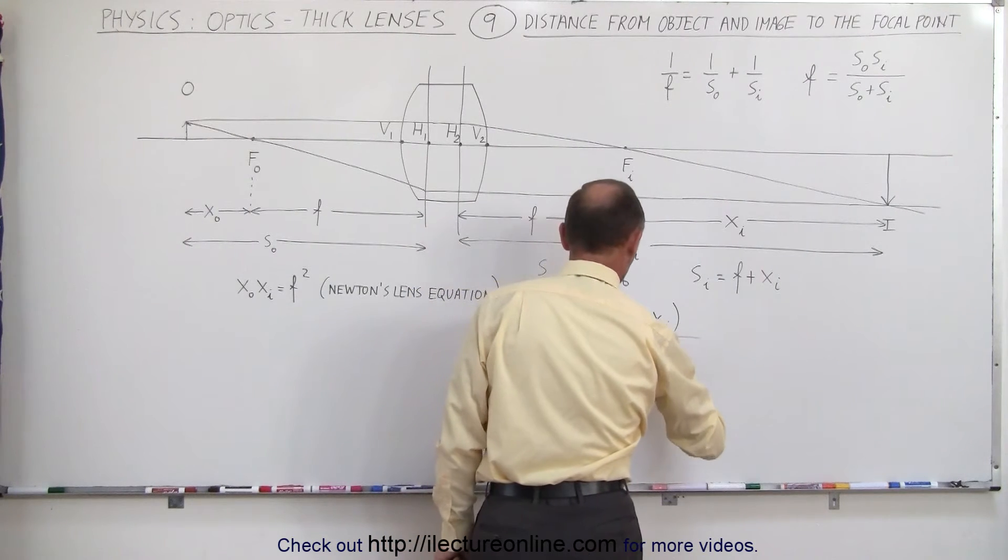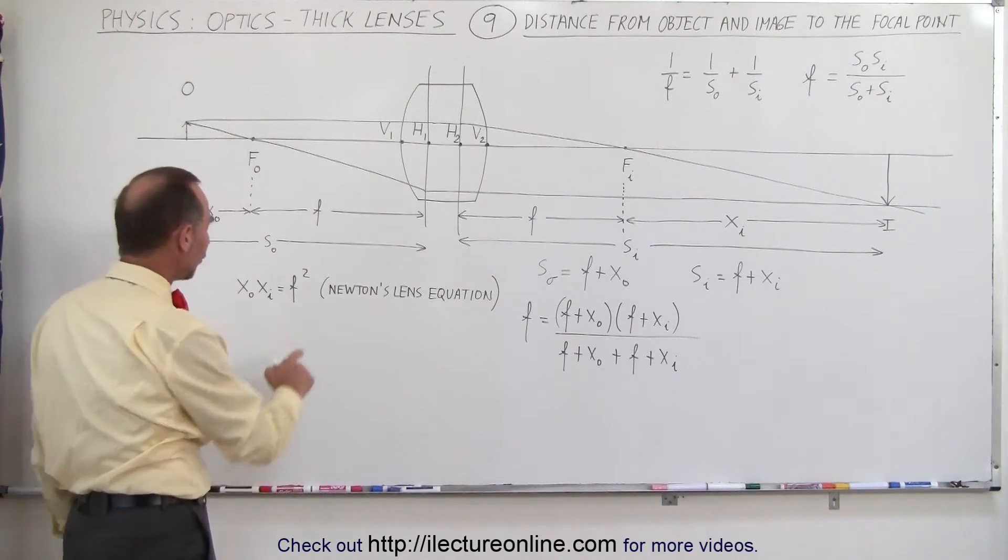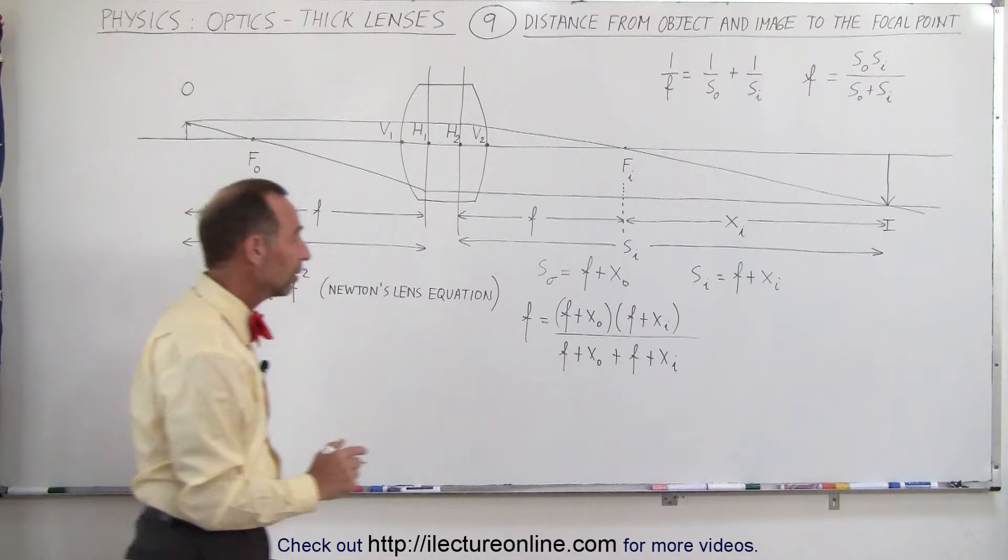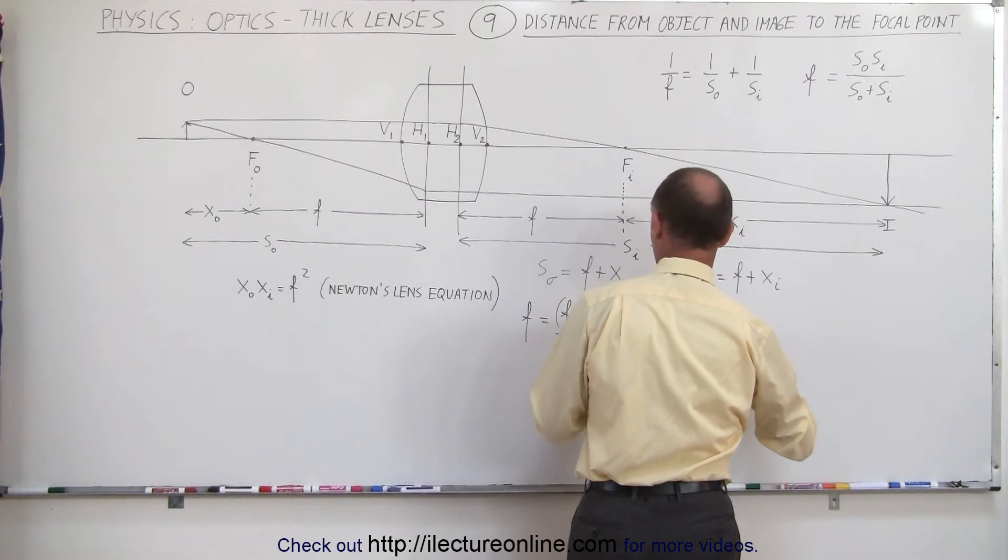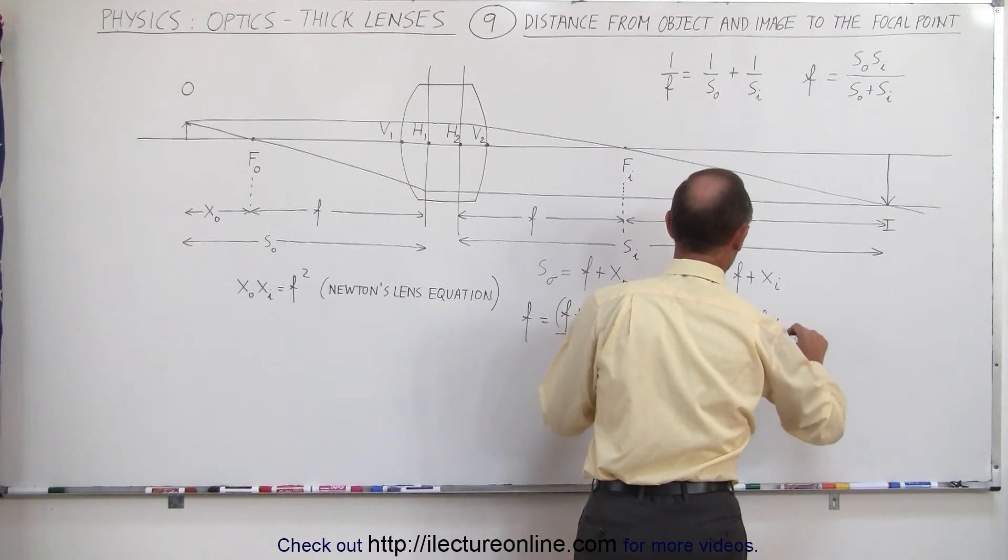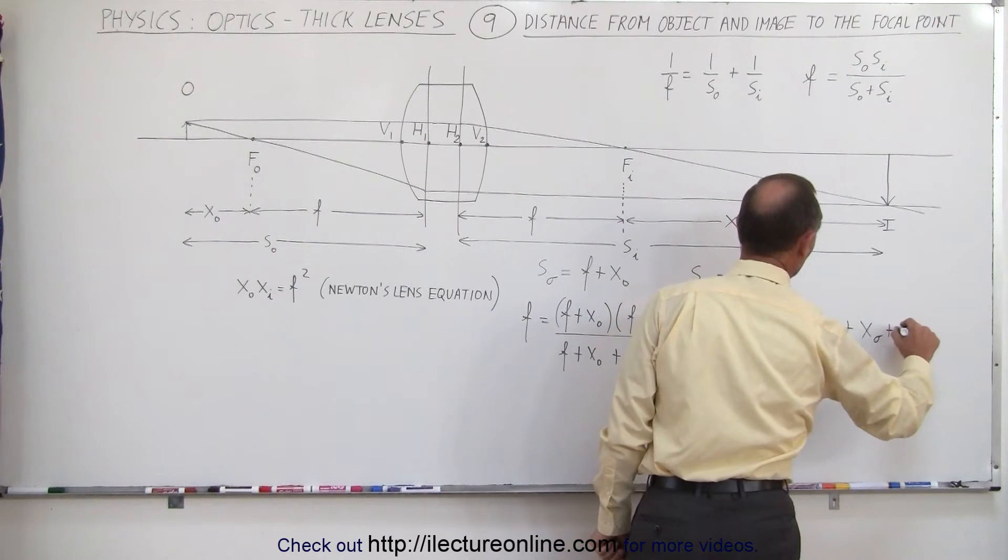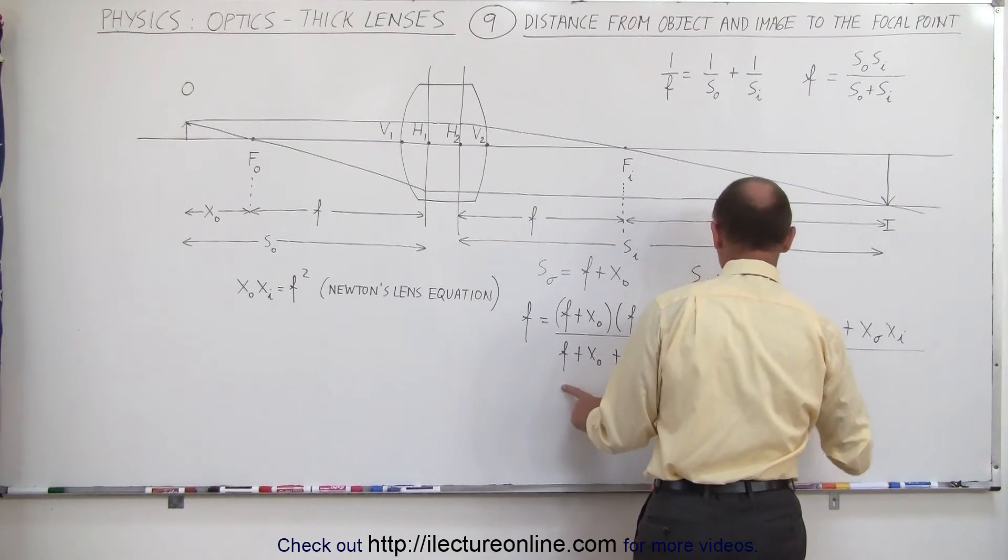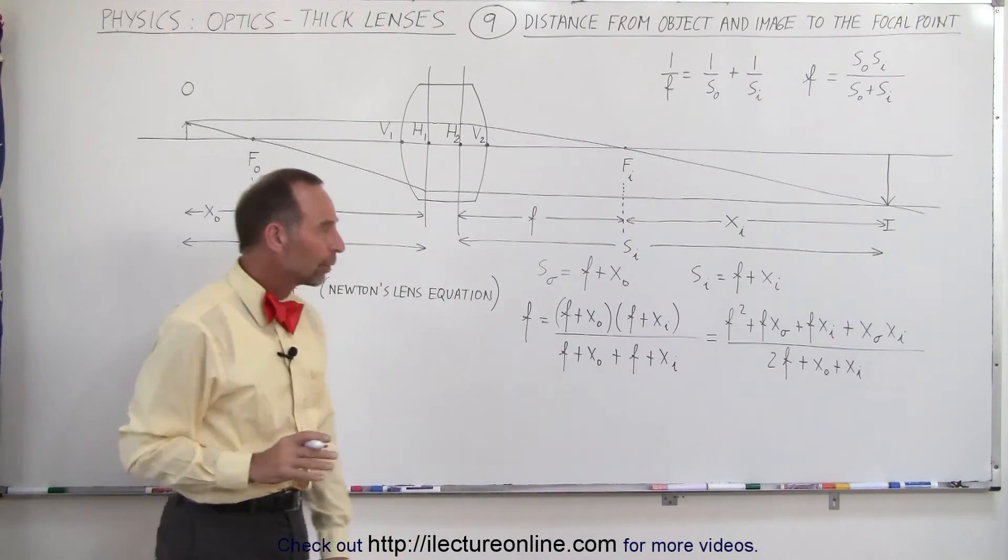Plus that would be f plus x sub i. If we now solve that for f squared, and that's what it will be, we should be able to get the very same equation. Let's see if that works. First of all we're going to rewrite this as, when we multiply the top we get f squared plus f x sub o plus f x sub i plus the product of x sub o times x sub i. And in the denominator if we combine these we get 2f plus x sub o plus x sub i.